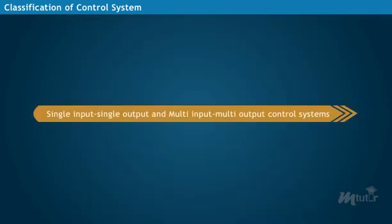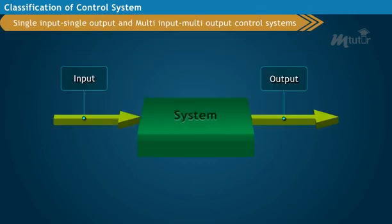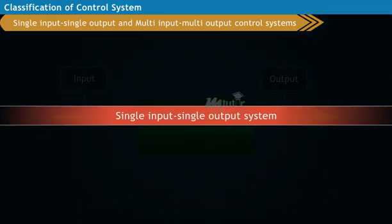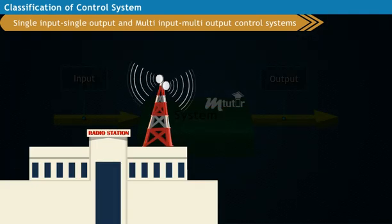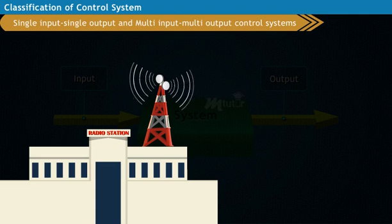Single-input single-output and multi-input multi-output control systems. A system which receives only one input and gives only one output is called the single-input single-output system. For example, let us consider the well-known radio system.